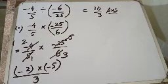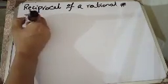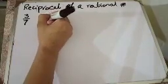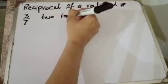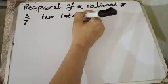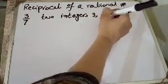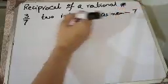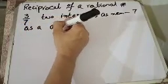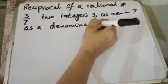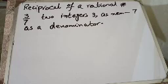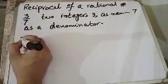अब हम देखते हैं कि reciprocal क्या होता है। Finding the reciprocal of a rational number - हमारे पास एक non-zero number है, जैसे कि 3 over 4। इसमें two integers हैं: 3 as numerator। उपर वाली रकम को numerator और नीचे वाली रकम को denominator कहते हैं। अगर हम interchange कर दें numerator and denominator को, we get another rational number 7 over 3.